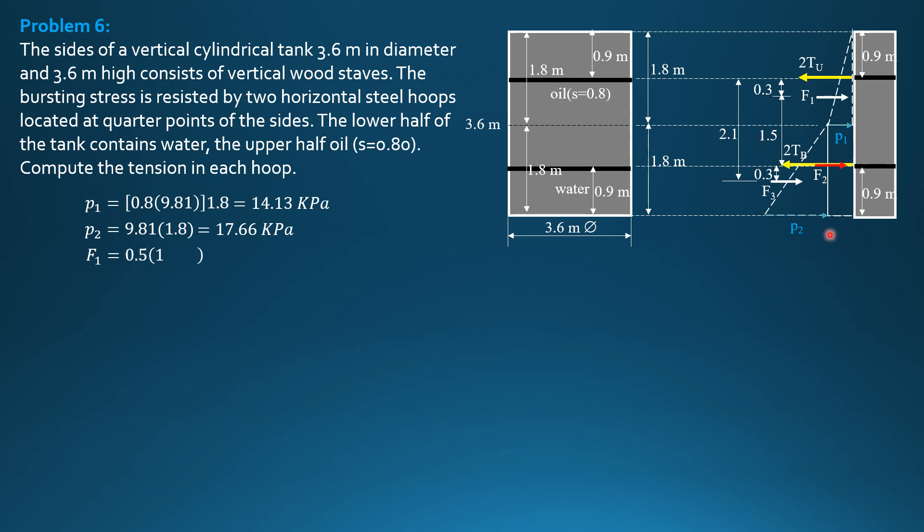F1 is volume of this pressure diagram, which is 0.5 times P1, 14.13 kilopascals height, 1.8, then perpendicular to the board is diameter 3.6. So F1 is 45.78 kilonewtons. F2 is equal to this pressure diagram, rectangular, so P1, 14.13, height 1.8, perpendicular to the board 3.6.